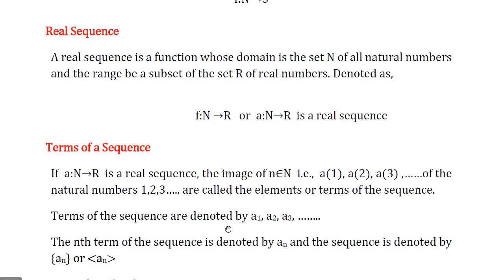Now, the terms of a sequence. If a from N to R is a real sequence, the images of n belonging to natural numbers — denoted by a(1), a(2), a(3), and so on — are called the elements or the terms of the real sequence. Those elements are also denoted by a₁, a₂, a₃, and so on.